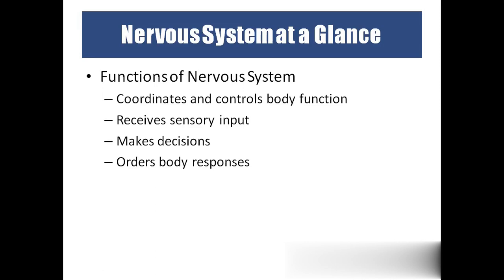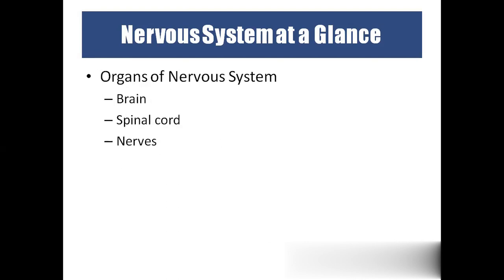The nervous system receives sensory input. According to that sensory input, we take decisions and our body responds. Sometimes decisions are taken by ourselves, which is voluntary. Sometimes decisions are taken by the body itself, which we call involuntary. Coming to the organs of the nervous system: brain, spinal cord, and nerves. Brain and spinal cord form the central nervous system, and nerves form the peripheral nervous system.